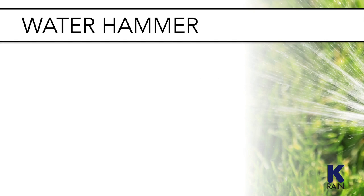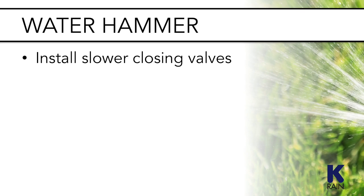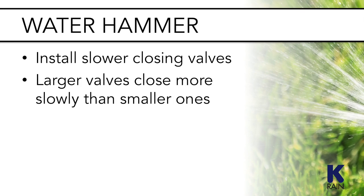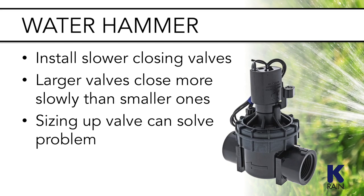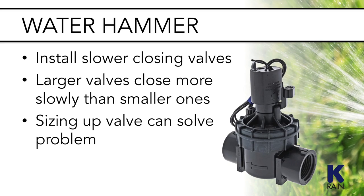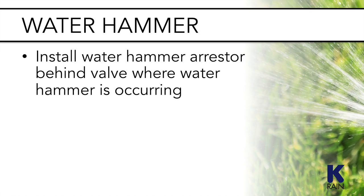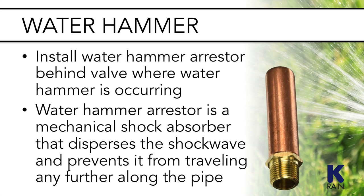Another potential solution to water hammer is to install slower closing valves — larger valves close more slowly than smaller ones, so sizing up the valve could solve the problem. You can also install a water hammer arrestor behind the valve where the water hammer is occurring. A water hammer arrestor is a mechanical shock absorber that disperses the shock wave, preventing it from traveling further along the pipe.